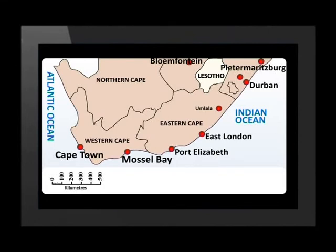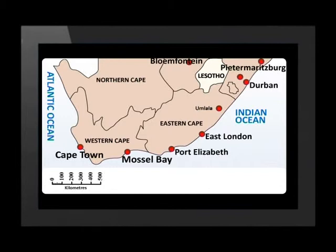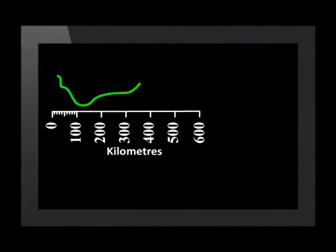Suppose you needed to estimate the distance between Cape Town and Mossel Bay. By visualization, you could estimate that the distance is approximately 400 kilometers. To confirm this, you could either use a ruler or a piece of string. Let's practice using a piece of string with a bar scale to measure the distance along the coast between Cape Town and Mossel Bay. We put the end of the string on Cape Town and wrap it around the edge of the coast until Mossel Bay. Now we put the string against the bar scale and find that this distance is roughly 500 kilometers.